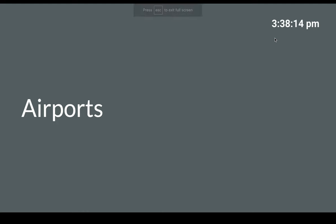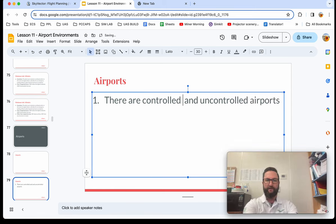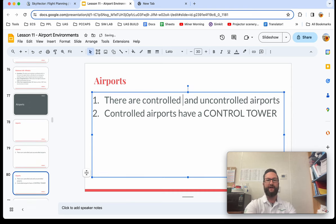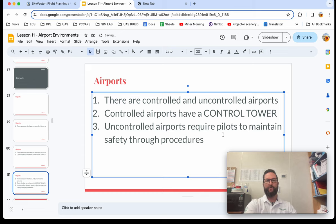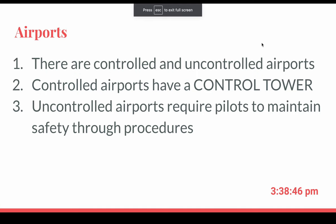Let's talk about airports. There are two types: controlled and uncontrolled airports. Controlled airports have a control tower. Uncontrolled airports require pilots to maintain safety through procedures — meaning following standard pattern entries, standard altitudes in the pattern, and certain procedures so that you're predictable and people know what you're going to do.